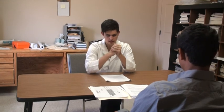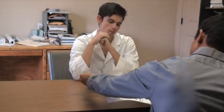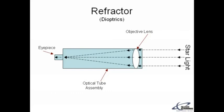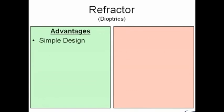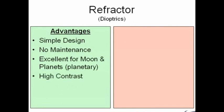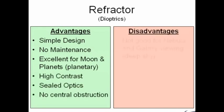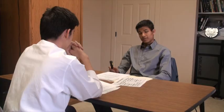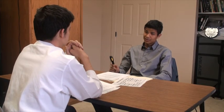What are the differences and how do they each operate? I'll begin with the refractor. The refractor telescope filters starlight through an objective lens, going down the optical tube to a focal point at the eyepiece. This is the type Galileo invented. Some advantages of the refractor telescope are its simple design and it's excellent for looking at the moon and planets. However, some disadvantages are it's not very good for nebula and galaxy viewing, and it costs more money than a simpler telescope.